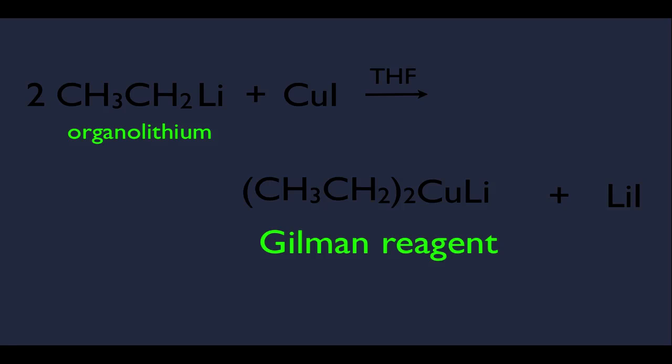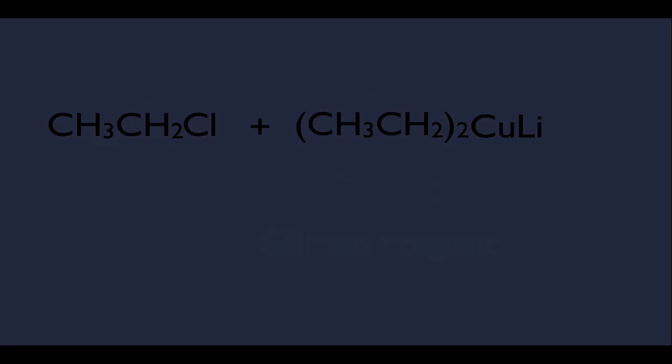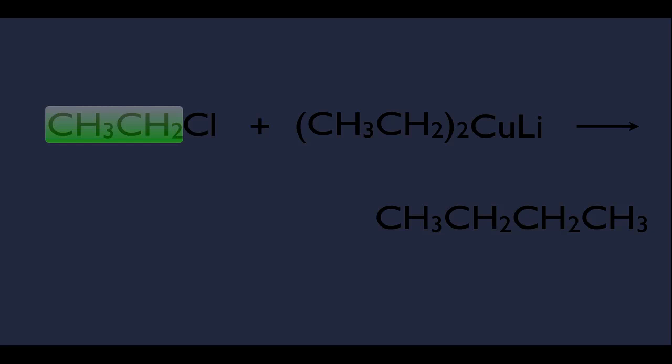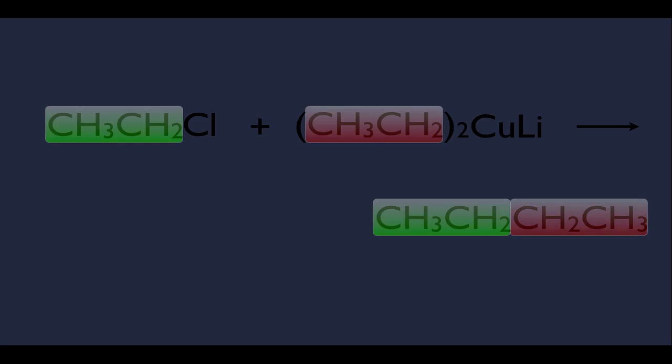Now that we know how to make them, let's look at an actual coupling reaction. The Gilman reagent reacts with an alkyl halide. It's very simple to predict the products — we end up coupling the two-carbon fragment from the alkyl halide with the two-carbon fragment in the parentheses of the Gilman reagent. In the product, two carbons came from the alkyl halide and two from the Gilman, forming a four-carbon chain.